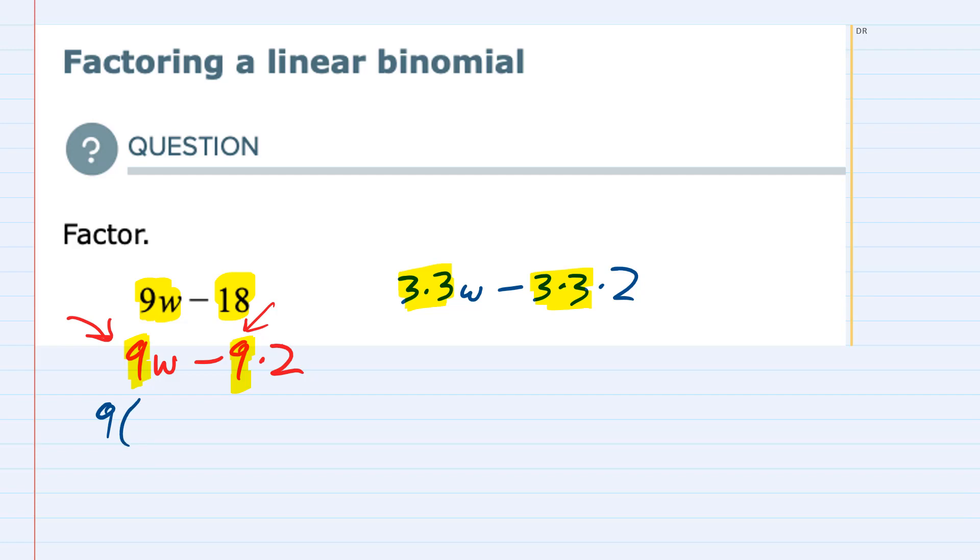Well, it was 9w. Factoring out a 9 is like taking the original and dividing by what I'm factoring out. I'm factoring out the 9. When I do that division, the 9s cancel. That leaves me with just a w. Checking this, 9 times w is 9w.